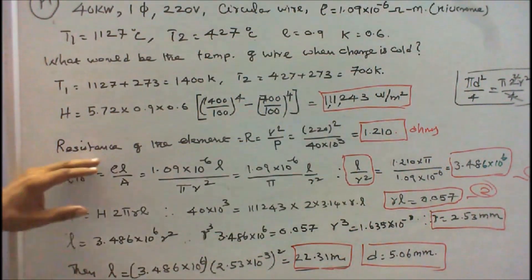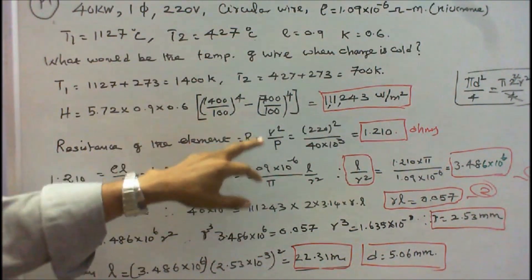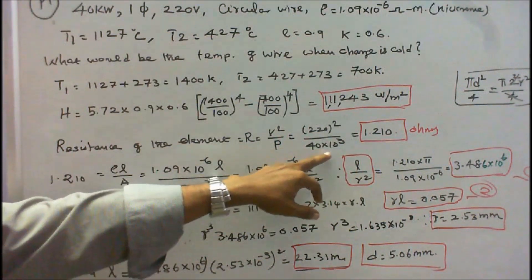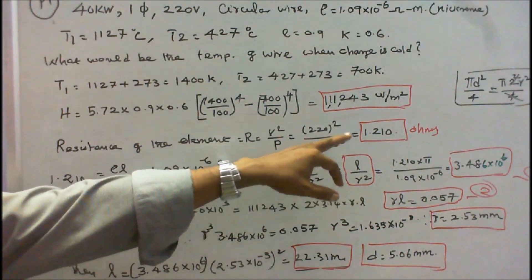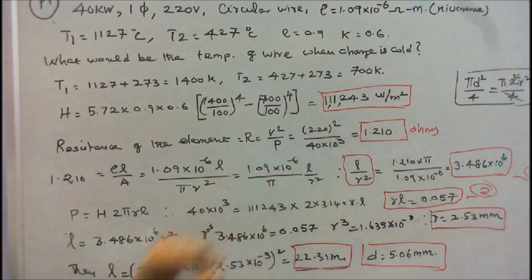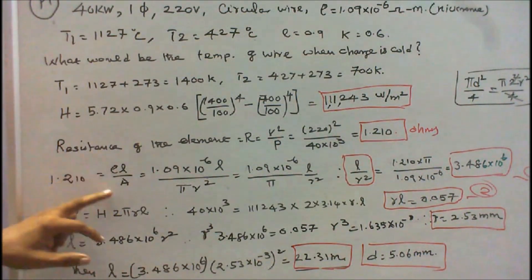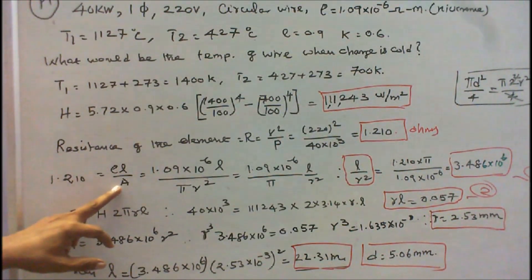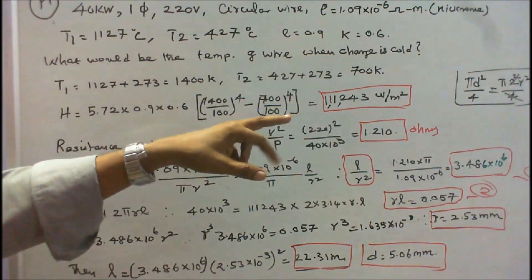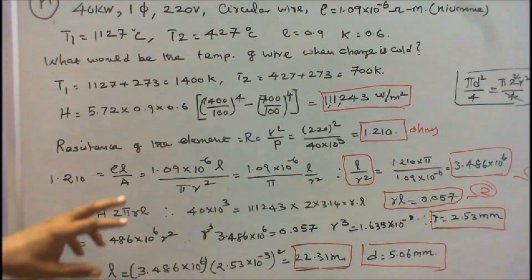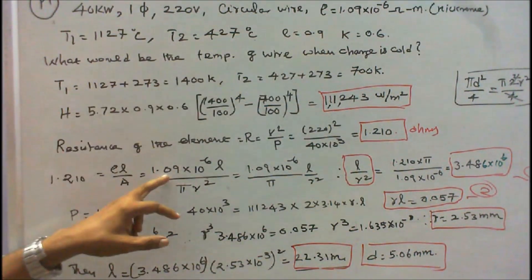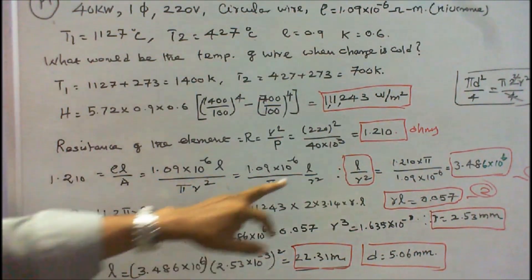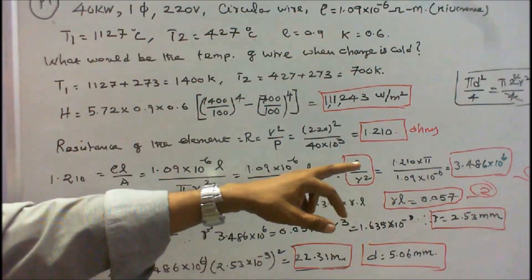We know that R equals V² divided by P. Voltage is 220V, so R equals 220² divided by 40×10³, which equals 1.210 ohms. Since R equals ρL/A, where A is the cross-sectional area, and for a circular wire A equals πd²/4 or πR², substituting the resistivity value gives L divided by R² equals 3.486×10⁶.